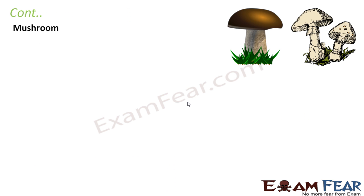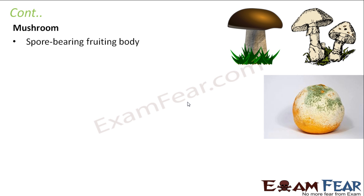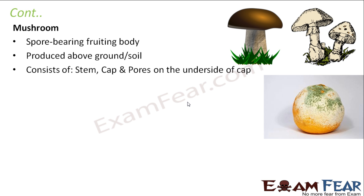The next one would be mushroom — a spore-bearing fruiting body. They are produced above ground or on soil. They consist of a stem, a cap, and pores on the underside of the cap. On the underside of the cap, you actually have a scale-like structure which forms the basidium, and on the basidium you will have the spores.